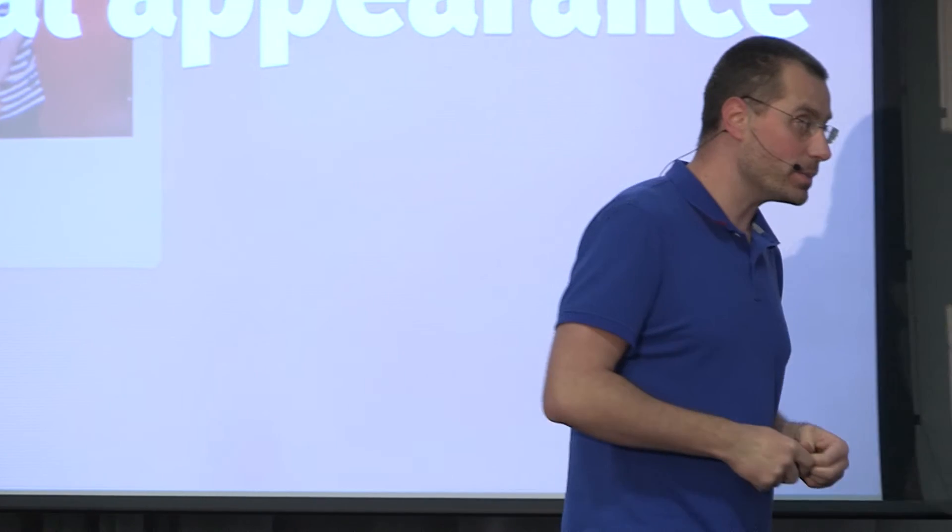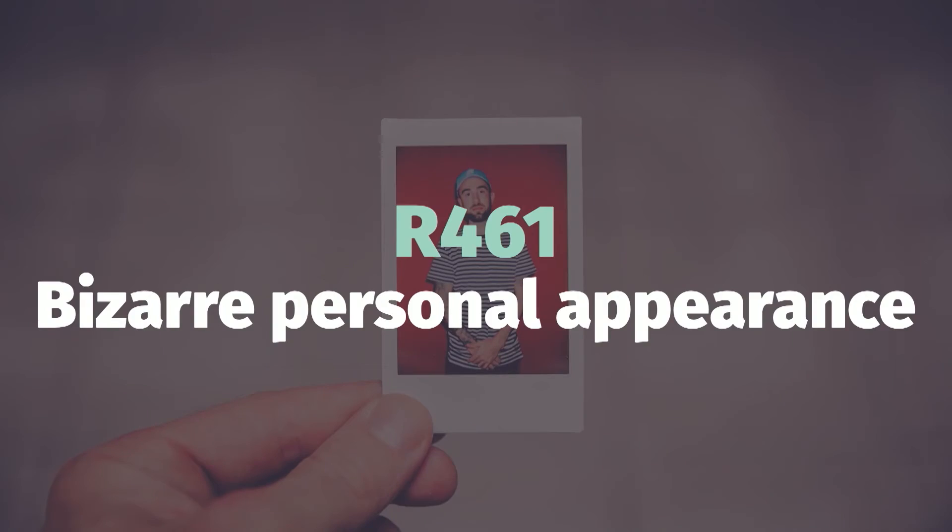The third thing that I think we started experiencing quite a lot early on before we figured out how this thing really works is R46.1, which is amazingly a medical code for a bizarre personal appearance. What I mean by that is occasionally we get really really strange data from the container.